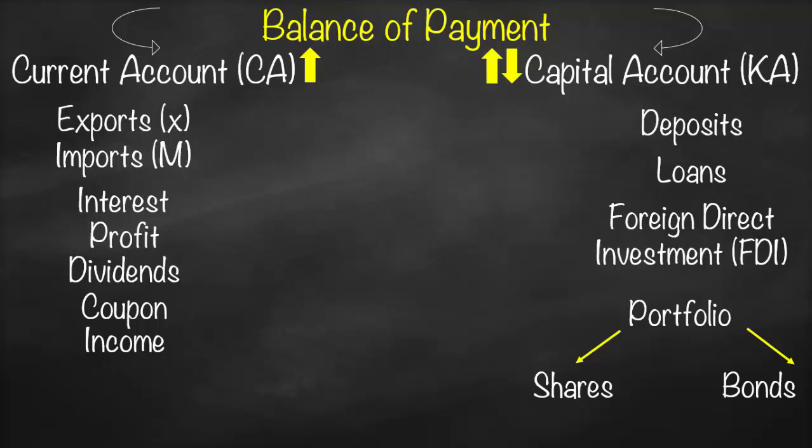Consider someone from a developing country with low average income who studies in Australia, gets a highly paid job, and sends part of their salary back to help their family — like Mexicans working in the US who send money home. The family does not repay that money, so it is a one-way transaction recorded under current account. This is called work remittance, and it is a very large number in the statistics of most developing countries.